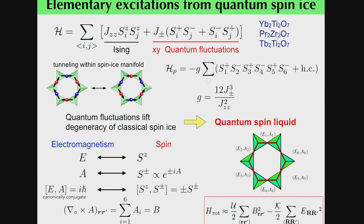The effective dynamics of the spin system can be mapped onto electromagnetism. This Hamiltonian can be described as Hamiltonian for quantum electrodynamics within the U(1) gauge theory. Here E and A correspond to the electric field and vector potential, respectively. Both E and A correspond to S^z and S^± in this Hamiltonian — a one-to-one correspondence.